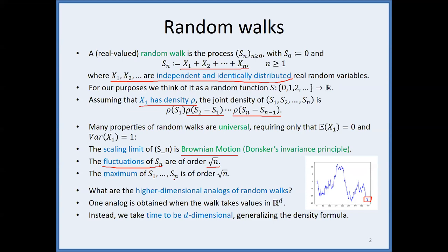Similarly, the maximum of the entire walk also has order square root n, and these properties are universal. In this talk we investigate higher dimensional analogs of random walks.